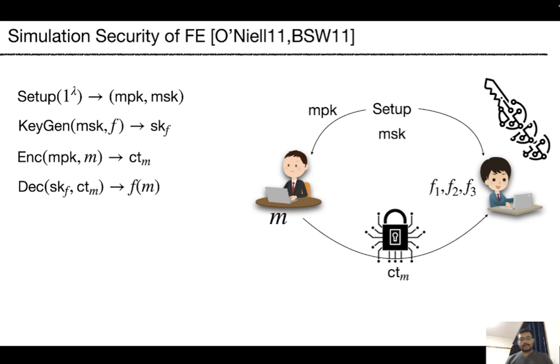Simulation security is the most desired security model for FE, which roughly says that given functional secret keys SKF1, SKF2, SKF3, the adversary can only recover the functional values of the message M and nothing else about the message from the ciphertext CTM.